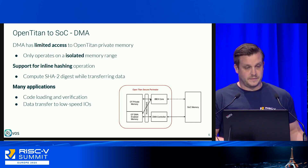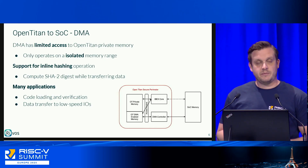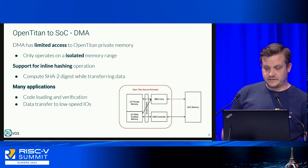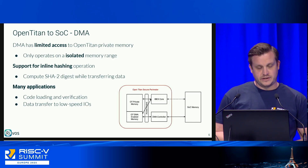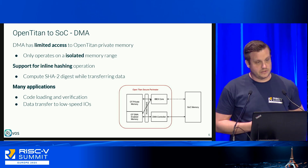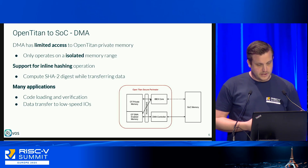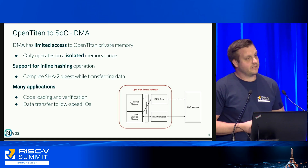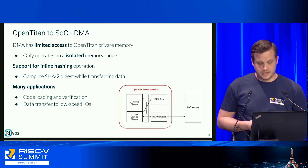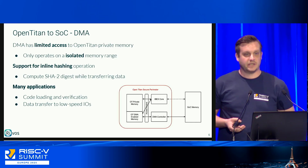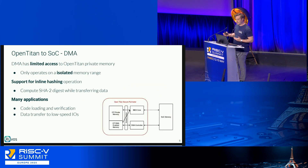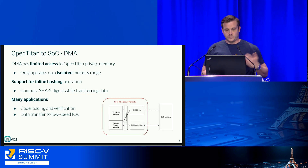A new DMA engine was added with configurable limited access to OpenTitan's private memory. It has two interesting features: inline hashing, so when you transfer data in and out you can compute hash values based on SHA-2 on the fly — handy when loading a code block from memory. The second feature is a hardware handshake mode, so you can generically hook up the DMA with any LSI device in OpenTitan such as UART or SPI to transfer large chunks of data, and can use that in conjunction with inline hashing.